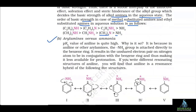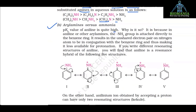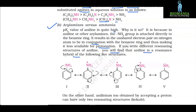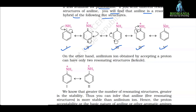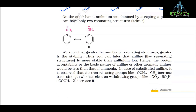B. Arylamines vs. ammonia. The pKb value of aniline is quite high because in aniline and other arylamines, the NH2 group is attached directly to the benzene ring. This results in the unshared electron pair on nitrogen being in conjugation with the benzene ring, making it less available for protonation. Aniline is a resonance hybrid of five structures, whereas the anilinium ion obtained by accepting a proton can have only two resonating structures. Greater the number of resonating structures, greater the stability; hence aniline is more stable, and its basic nature is less than that of ammonia.